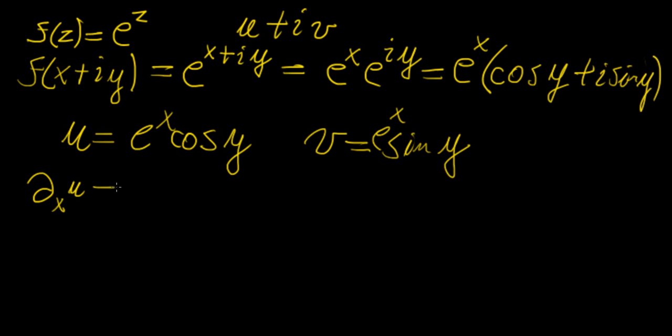So now if we proceed with the derivatives, we're going to have partial of u with respect to x, that's just going to be the same. Then the partial derivative of u with respect to y, that's going to be minus e to the x sine y.